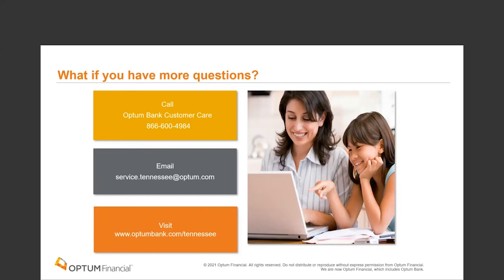Question from Kenneth: 'If proper documentation cannot be found, do I send a check to PO Box 30516 in Salt Lake City?' Nicole from Optum: That is not the address we use for FSA claim repayment — I'll put the correct address in the chat. You can also make repayment via the web portal at optumbank.com/Tennessee by adding your personal bank account and making repayment directly from the website. If sending a check, include a cover letter indicating where the funds should be applied. Those funds will be put back into your FSA and available for use on different eligible expenses.